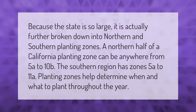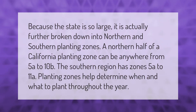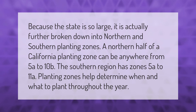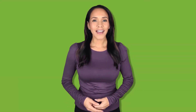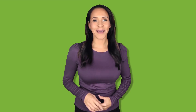Because the state is so large, California is actually further broken down into northern and southern planting zones. The northern half can be anywhere from zone 5a to 10b, while the southern region has zones 5a to 11a. Planting zones help determine when and what to plant throughout the year. Thank you for watching — please subscribe and hit the bell notification.